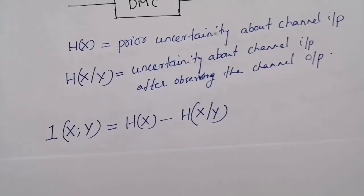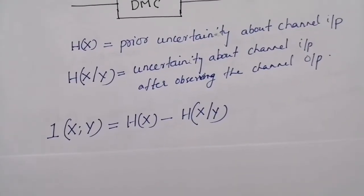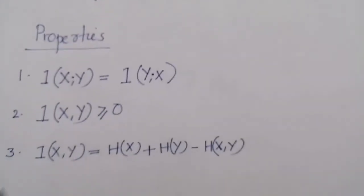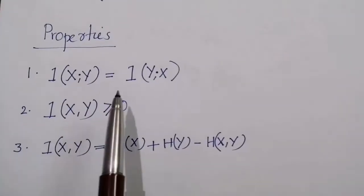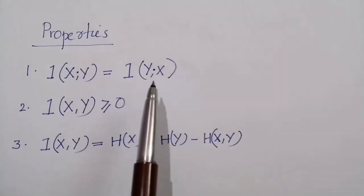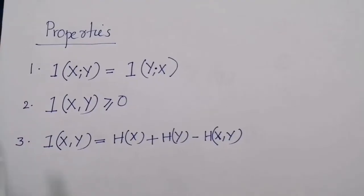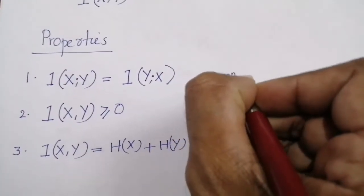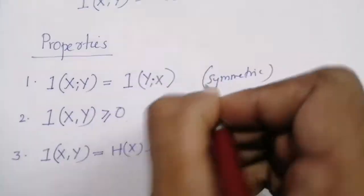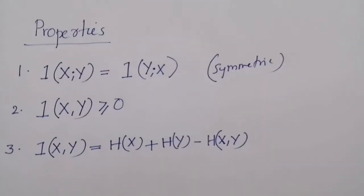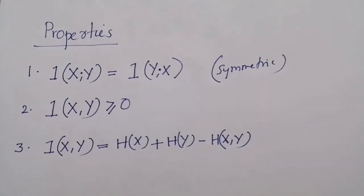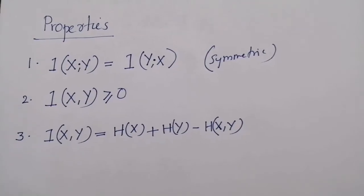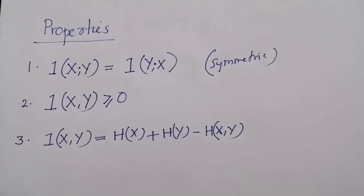Now we will look at the properties of mutual information. The first property is I(x;y) = I(y;x), meaning mutual information of a channel is symmetric. The second property is I(x;y) ≥ 0, meaning mutual information is non-negative.